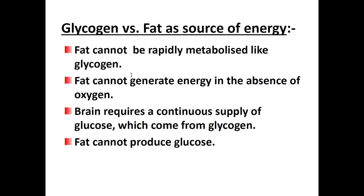Apart from glycogen, there is also fat — both are storage forms of energy in the body. However, fat generally cannot be rapidly mobilized to generate glucose and energy. That is why the fastest storage form of energy in the body is glycogen, because it can be easily mobilized and broken down to produce glucose. Fat also cannot generate energy in the absence of oxygen.